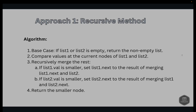First is the recursive method. The base case is: if either list1 or list2 is empty, we return the non-empty list. Then we compare the values of the current node of list1 and list2. If list1's value is smaller, we set list1.next to the result of merging list1.next and list2, then return list1. If list2's value is smaller, we set list2.next to the result of merging list1 and list2.next, then return list2.